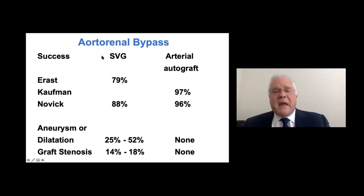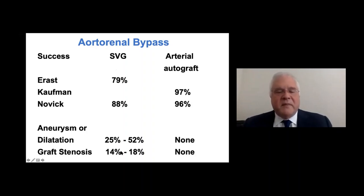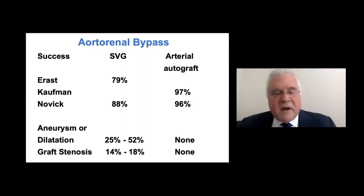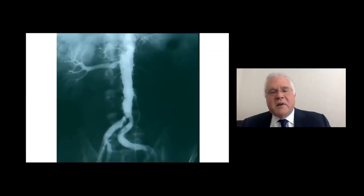Aortorenal bypass was a mainstay of surgery for these patients. Some used saphenous vein grafts, others used arterial autografts — such as the hypogastric (internal iliac) artery — with quite good success rates. The problem with saphenous vein grafts was subsequent dilation or stenosis in about a quarter to a half of cases, leading to a shift toward arterial autografts. Splenorenal bypass is also an option — obviously only for the left kidney — with the advantage of only one anastomosis without needing to mobilize the aorta.